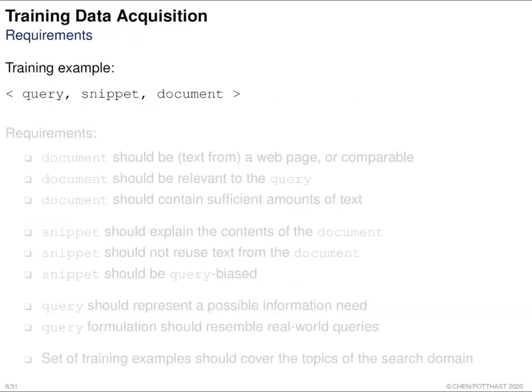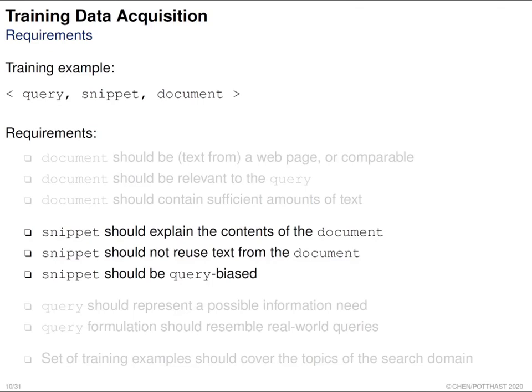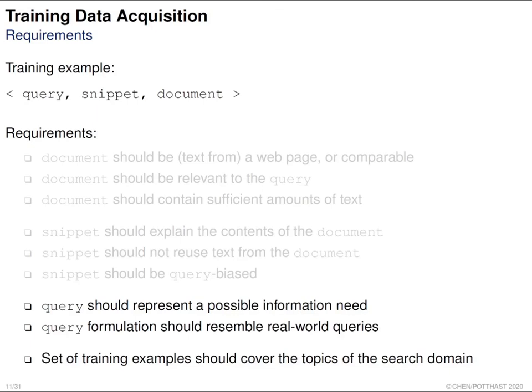Now let's look closely at our training examples. We need a query, a snippet, and a document. The document should be from a web page, relevant to a query, and contain sufficient text — not video or image. The snippet should explain the document's content, not reuse text from the web page, and be of good quality. The query should represent an information need, resemble real-world queries, and the overall training data should cover the topics of the search domain.